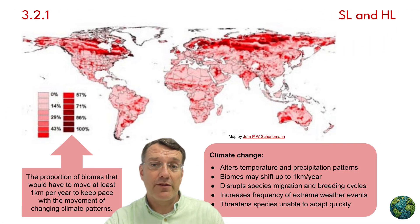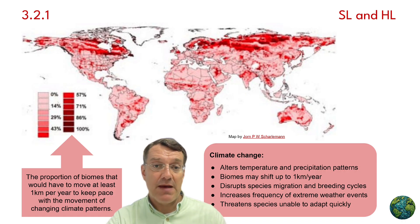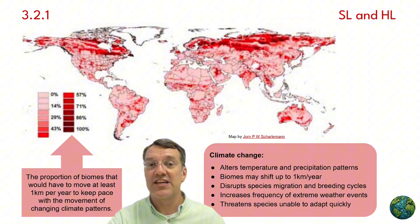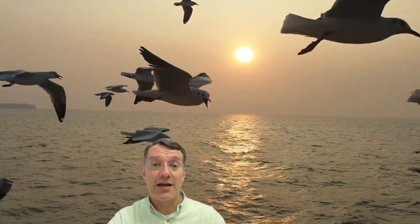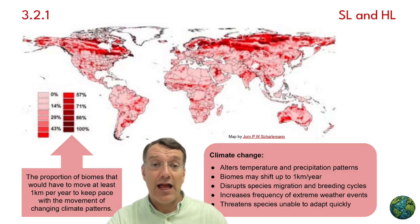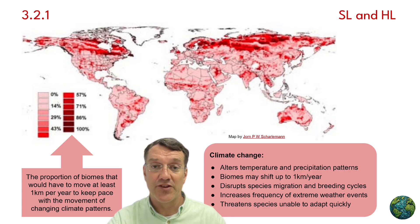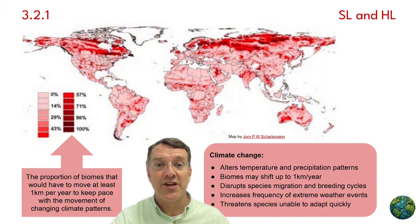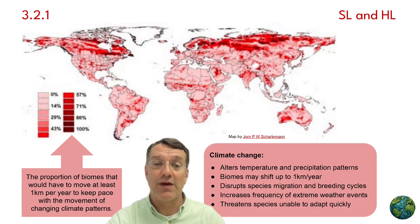Climate change poses a unique threat to biodiversity because species must either adapt, migrate, or face extinction. This map shows regions where biomes would need to shift at least one kilometer per year to keep pace with changing climate patterns. Remember, plants can't move the way animals can — they have to migrate simply by dispersing seeds and regrowing farther from their native range. Climate change alters temperature and precipitation patterns, disrupts migration and breeding cycles, increases extreme weather events, and particularly threatens species that can't adapt quickly enough.